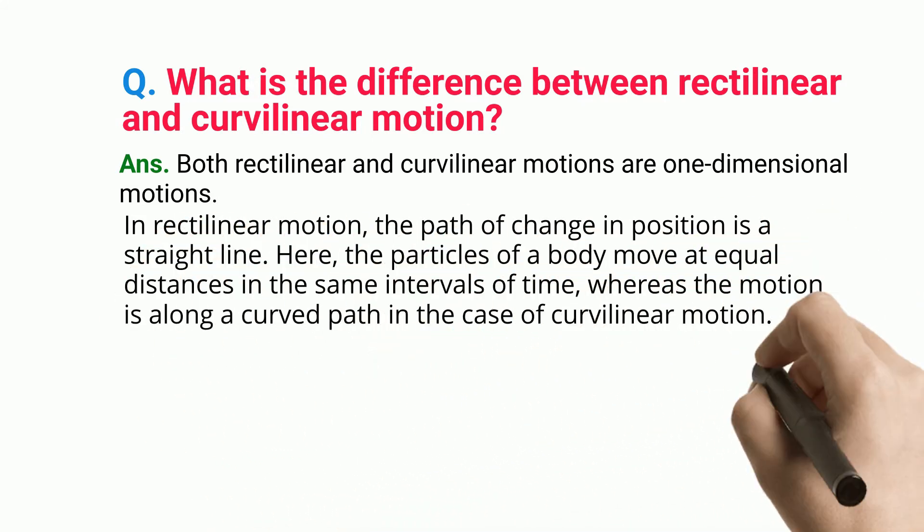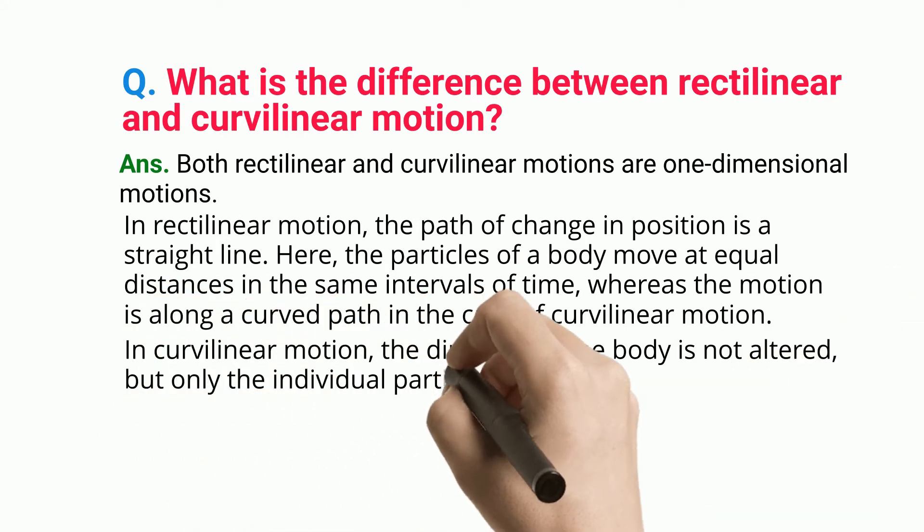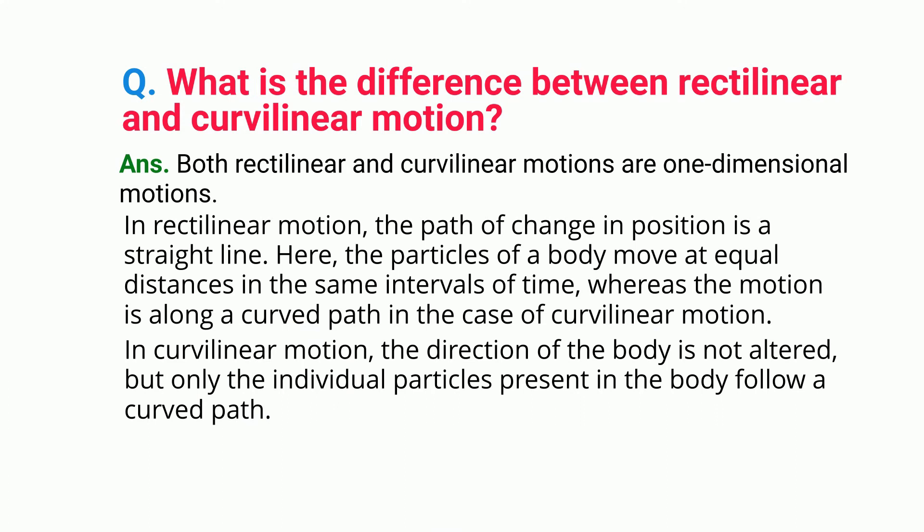Whereas the motion is along a curved path in the case of curvilinear motion. In curvilinear motion, the direction of the body is not altered, but only the individual particles present in the body follow a curved path.